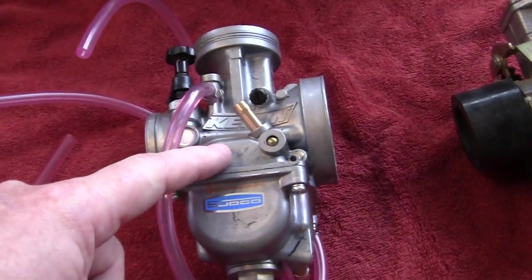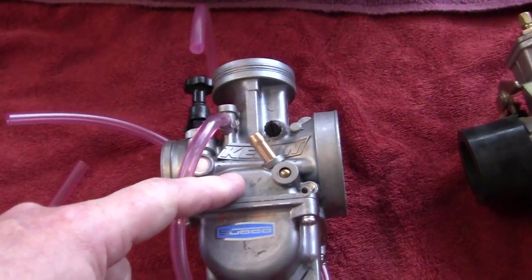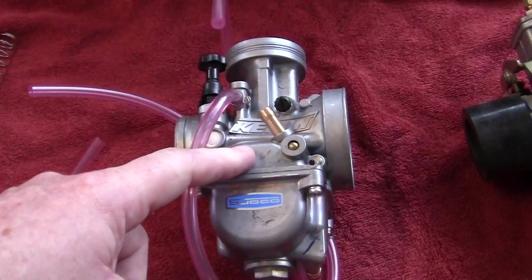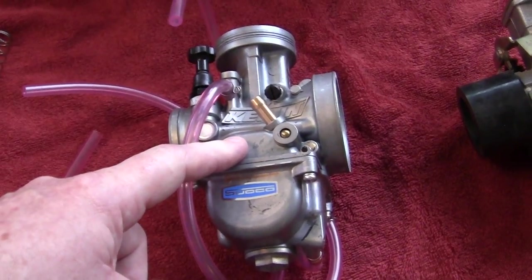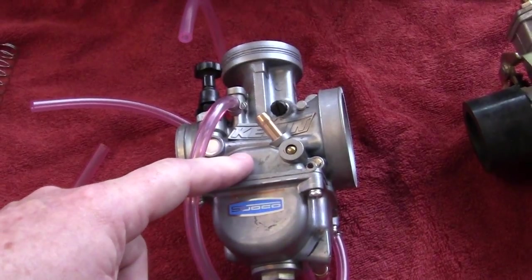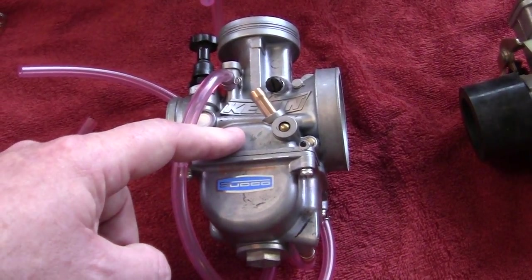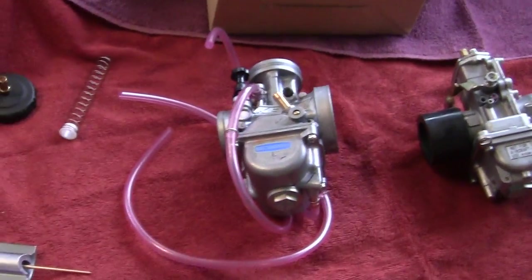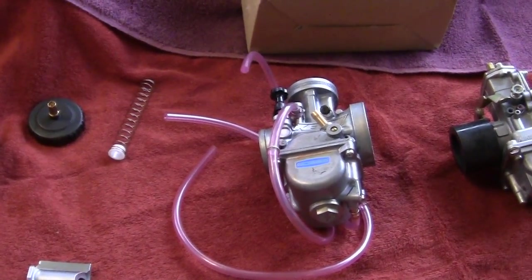Except that Keihin has spent millions of dollars developing these. Why should they spend 10 million dollars developing their next newest best quality carburetor when someone in China or Taiwan or wherever is going to take a 3D model of it and copy all that work and sell it for 25 dollars.